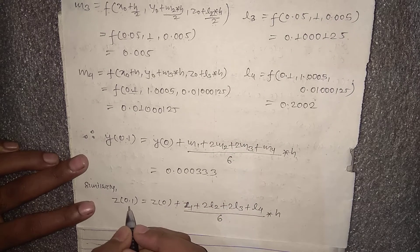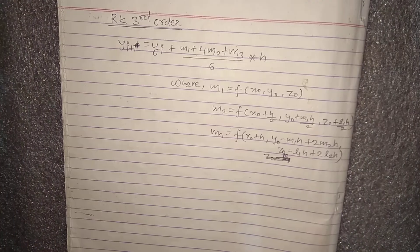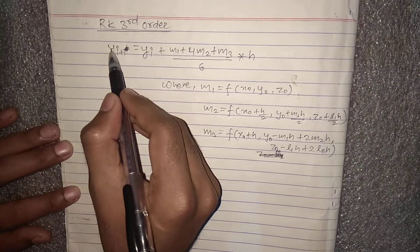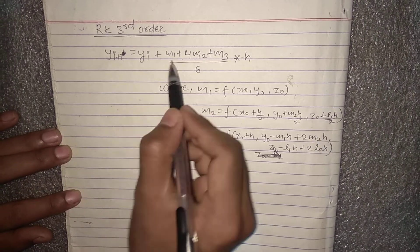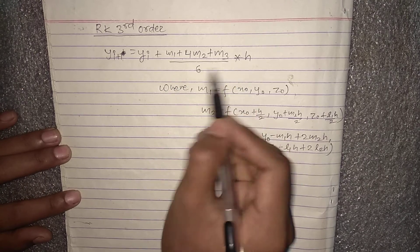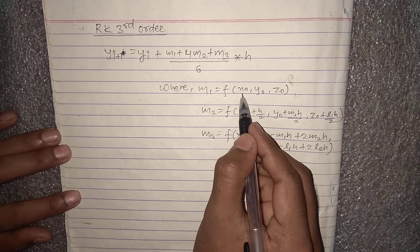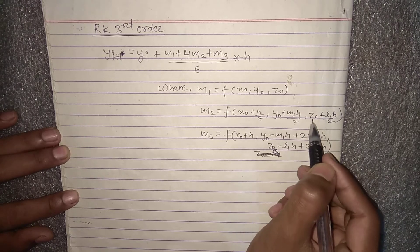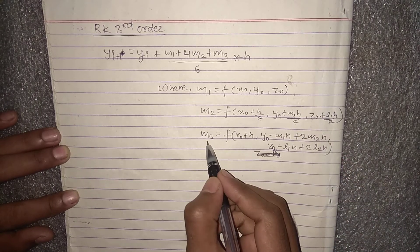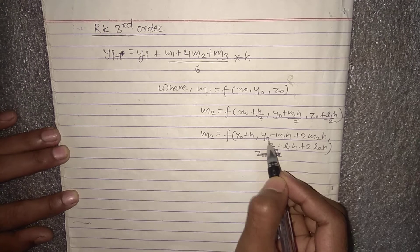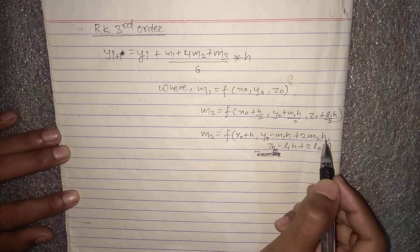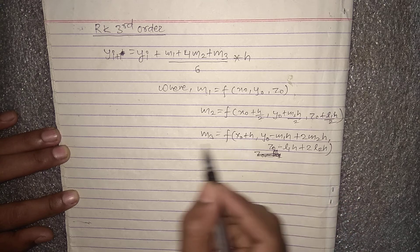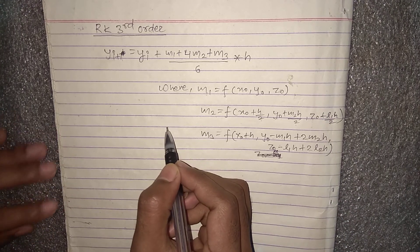If the problem instead required the RK3 order method, the formula is: y_(i+1) = y_i + (m1 + 4·m2 + m3)·h/6, where m1 = f(x₀, y₀, z₀), m2 = f(x₀ + h/2, y₀ + m1·h/2, z₀ + l1·h/2), and m3 = f(x₀ + h, y₀ − m1·h + 2·m2·h, z₀ − l1·h + 2·l2·h). This formula can be used to solve using the RK3 method.